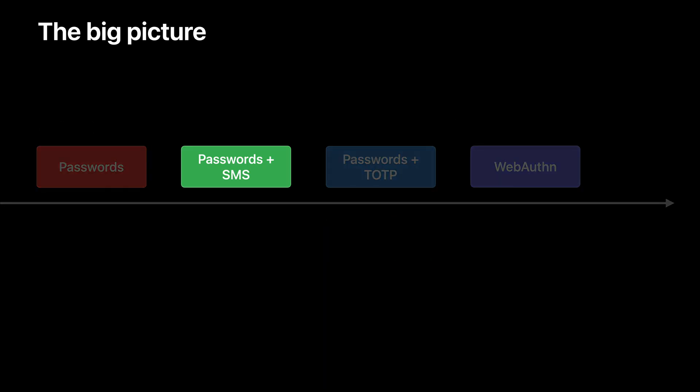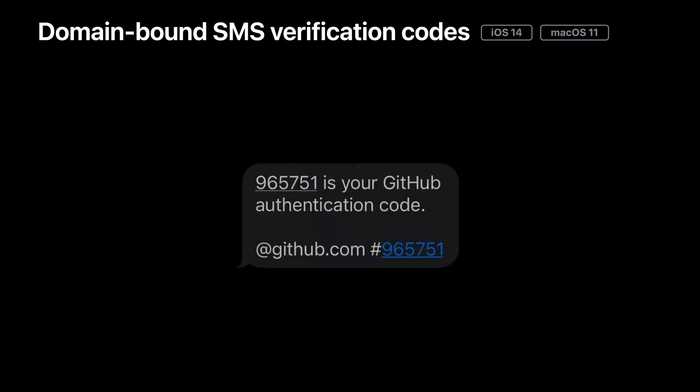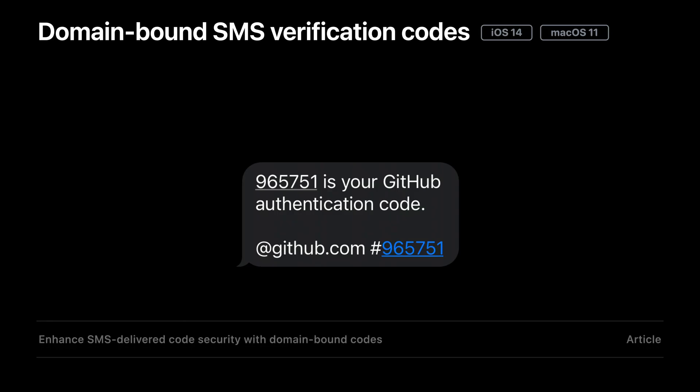Anything you can do to keep people safer online is good. One step you can take concerns verification codes delivered over SMS. As you're evaluating adopting time-based verification codes, you might still need to send codes with SMS. In iOS 14 and macOS Big Sur, we introduced a simple mechanism for making your SMS codes more resistant to phishing by adding domain bindings to your messages. A domain binding communicates with Autofill that the code in this message is meant for a particular domain. When the code is bound in this way, Autofill will only offer the code if the domain matches the web page or one of your app's associated domains. This works on the same mechanisms as associated domains and universal links. You can learn more in an article we published about enhancing the security of SMS codes with domain bindings.